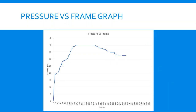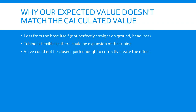Here we have a pressure versus frame graph of the water hammer phenomenon once the exit valve is closed. The pressure quickly spikes to 40 psi before settling down to a more steady 32 psi. The reason our expected value doesn't match the calculated value is due to losses from the hose not sitting perfectly straight on the ground, the tubing being flexible which could have caused expansion, and the valve not being closed quickly enough to correctly create the water hammer effect.